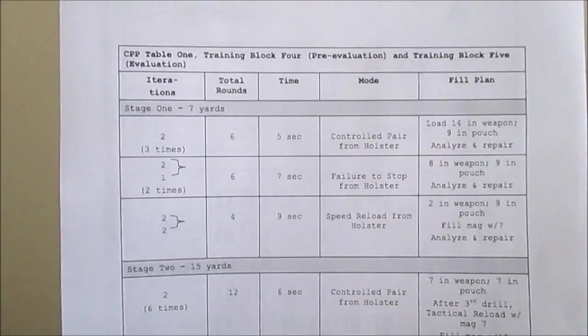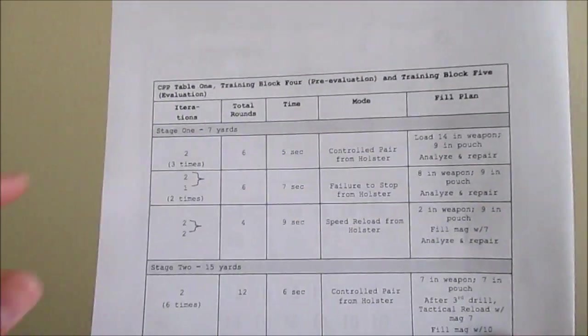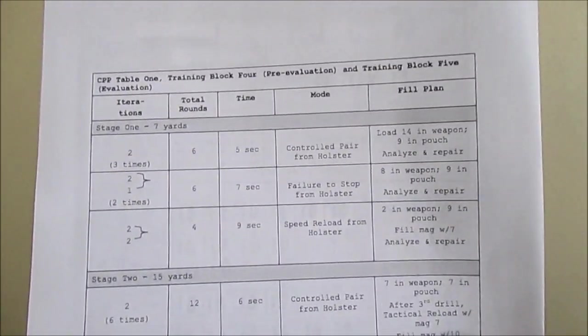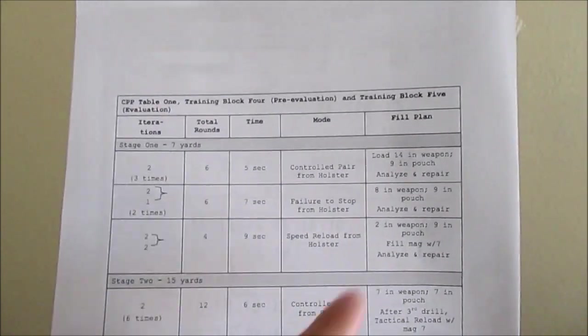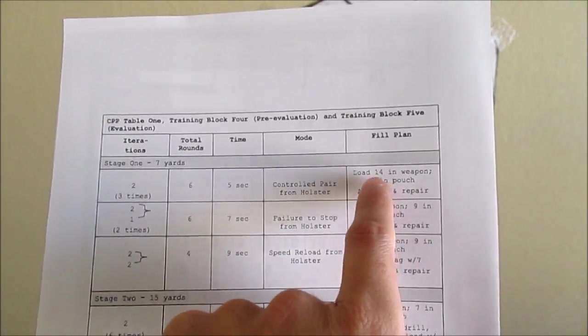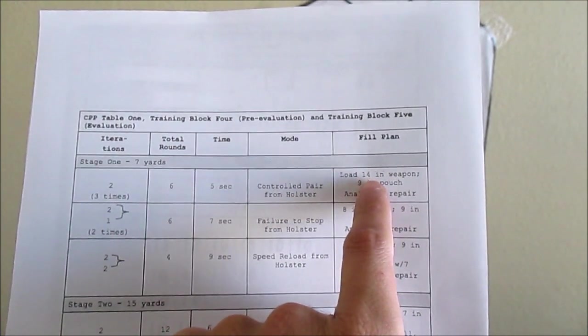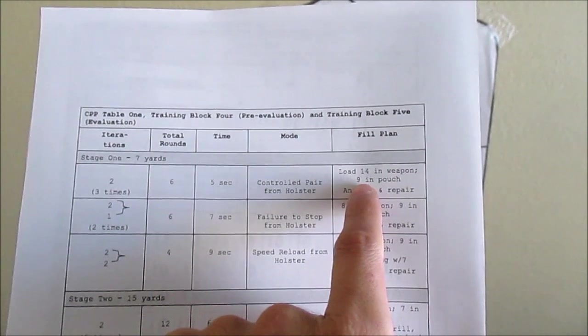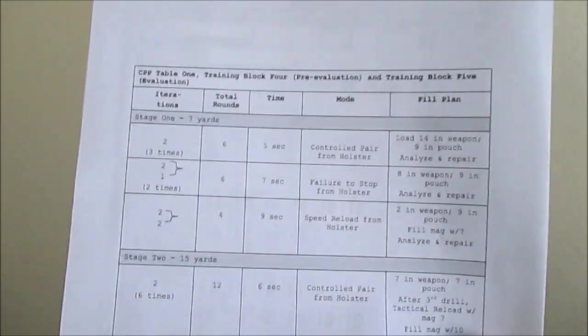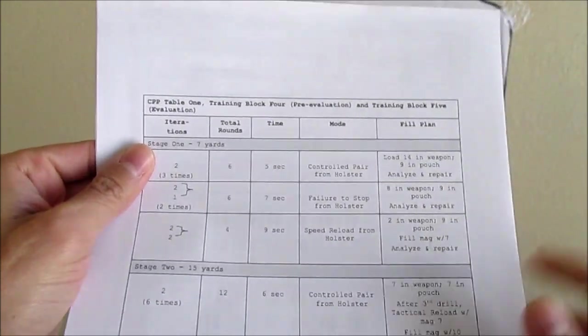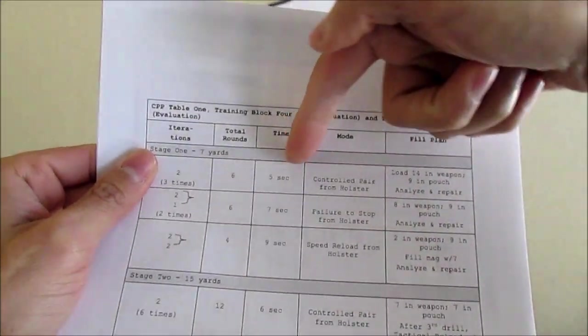So here I have exactly how the qualification goes. At 7 yards you'll start with your Beretta in the holster with the safety on. And 2 magazines. So 1 in it that had 14. And 1 that has 9 in a magazine pouch. You'll take 2 shots from the holster. And they give you 5 seconds to do it.